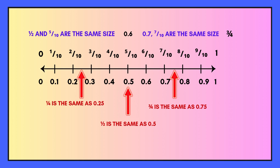The answer: this one is slightly different because a half and five tenths are the same size. The next largest is 0.6. Then we have 0.7 and seven tenths — they are both the same size. And finally we have three quarters.